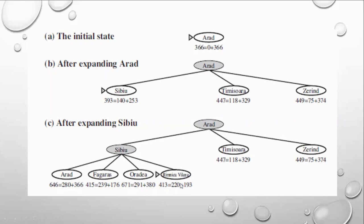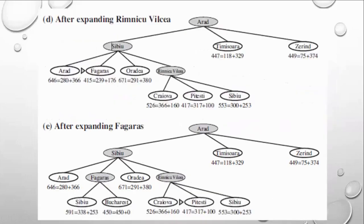Now you go to Rimnicu Vilcea and expand it. These are the cities you get as nodes. Calculate f(n) for each city. Among all these cities, you got the lowest value for Pitesti — 417. But if you see the previous level, Fagaras has 415. Since Pitesti has 417 and Fagaras has 415, you should not go in this direction. You backtrack to Fagaras and try to expand Fagaras.